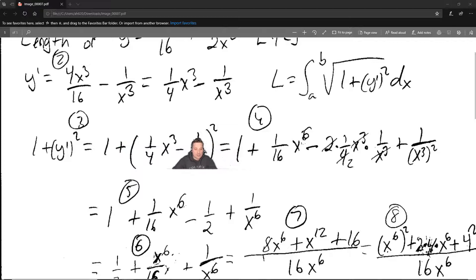Now we need to compute as follows. Step 3 here, 1 plus y prime squared. So that's going to give you the following: 1 plus 1 fourth x cubed minus 1 over x cubed to the second. But now that's a whole process that looks like the following. So you're going to have to square things out.